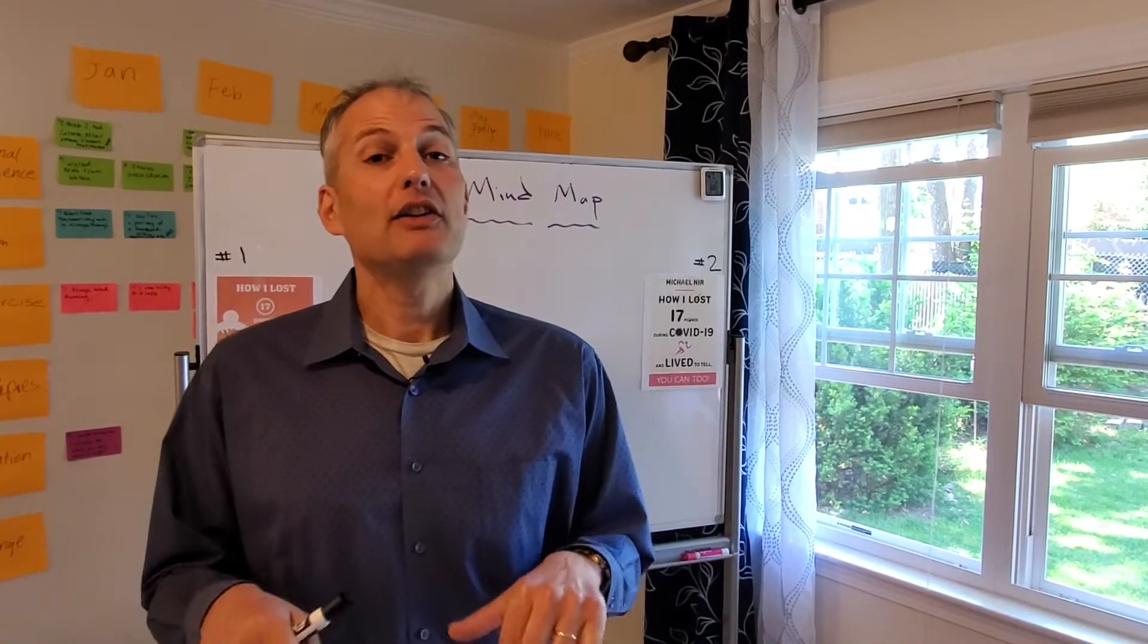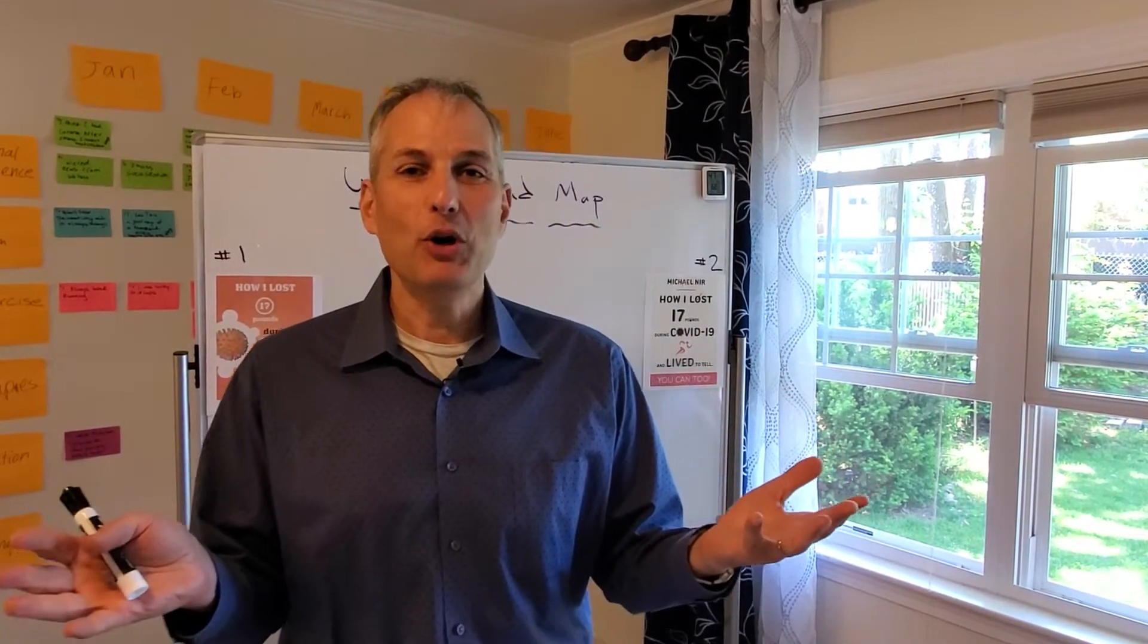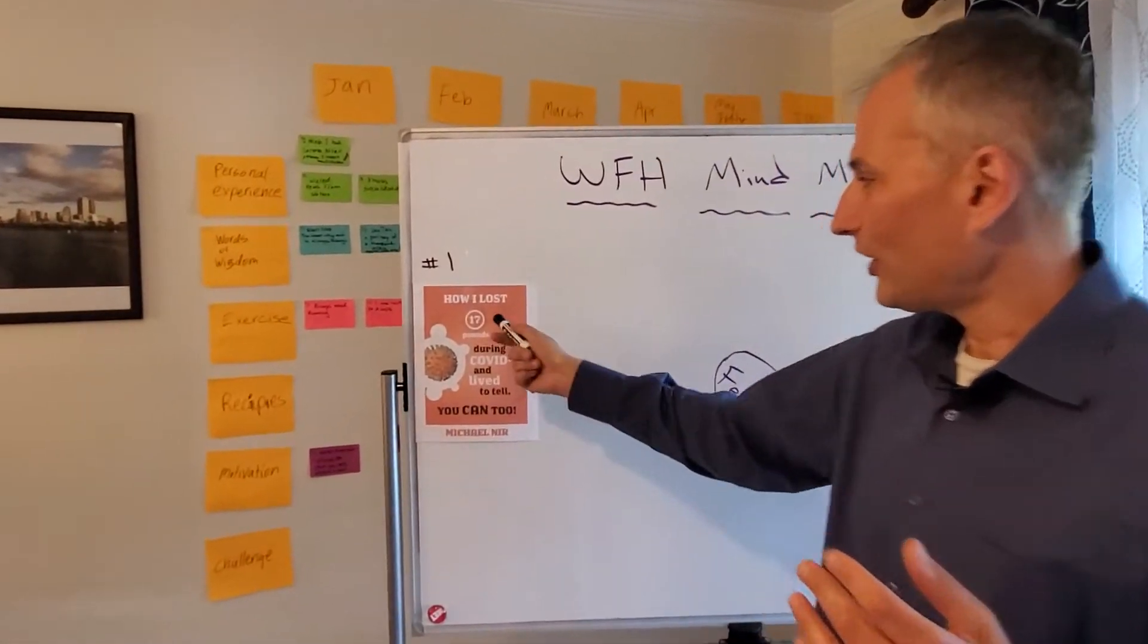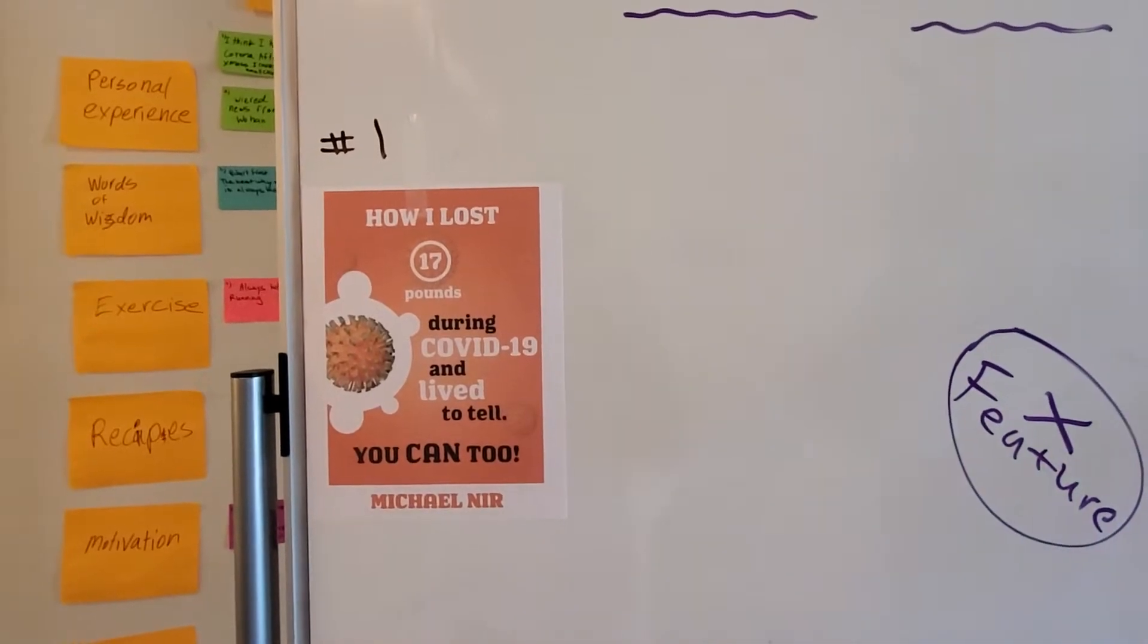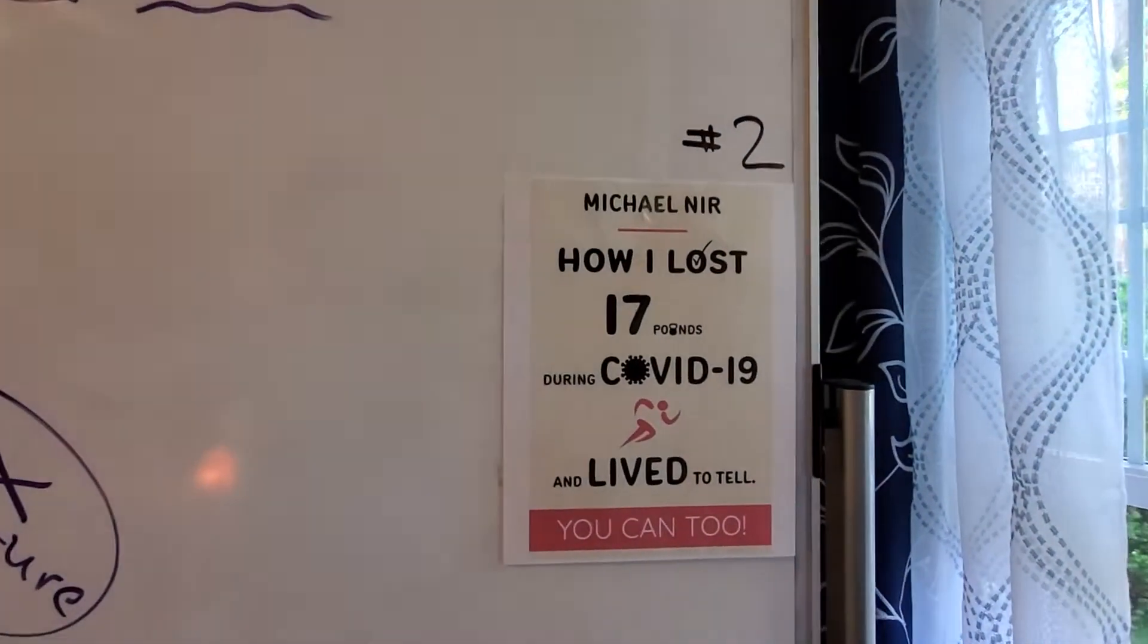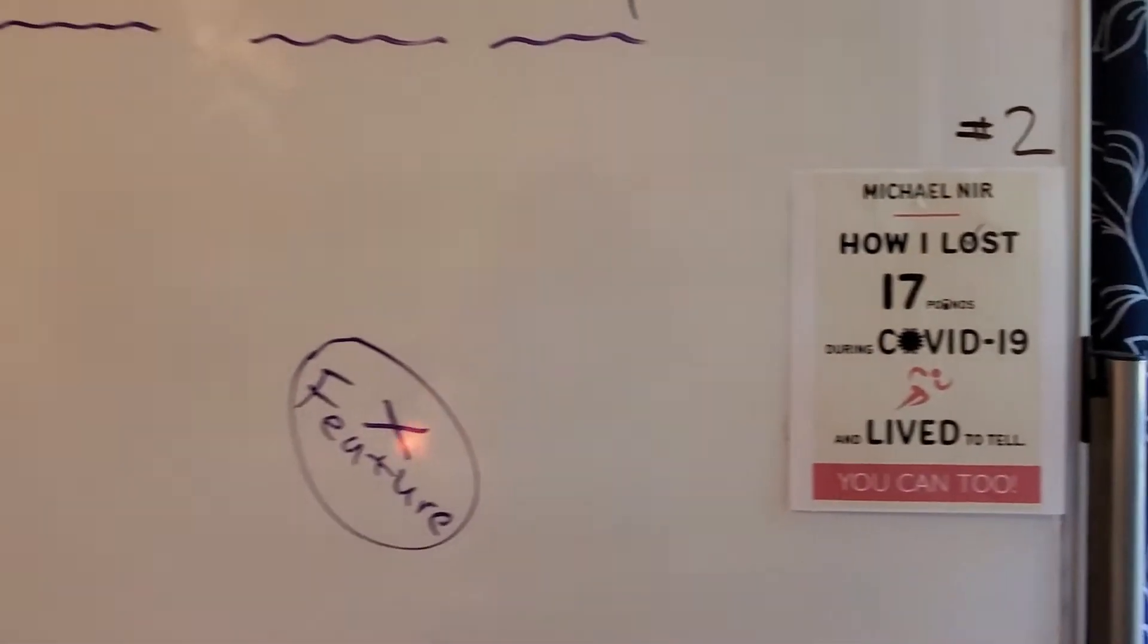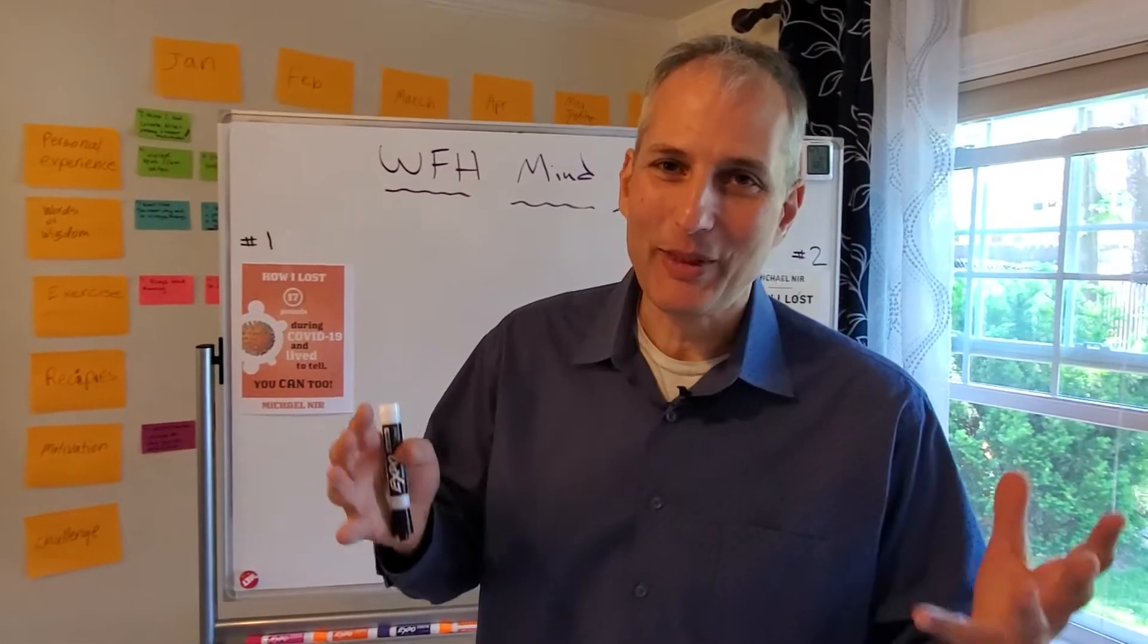And this time, I need your help with two different covers we have for the book. So this is number one. How I lost 17 pounds during COVID-19 and lived to tell. You can too. And this is number two. I need you to vote because we're not sure which one would work better. So if you can vote number one or number two below or just email me at Michael at michaelneer.com. That'd be awesome. Thank you so much.